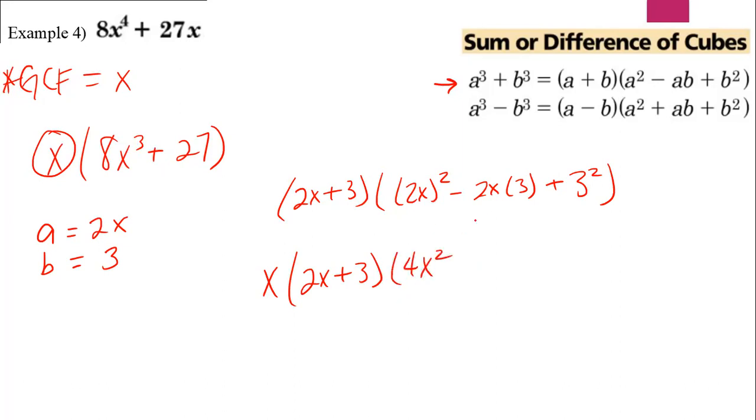What is 2x squared? 4x squared. 2x times 3 is 6x and 3 squared is 9. So that is the final answer. Again, GCF, greatest common factor, greatest common factor, greatest common factor.